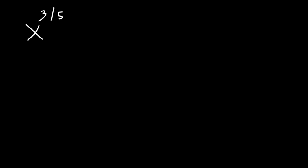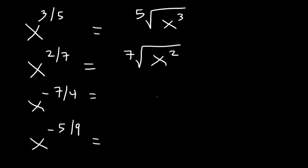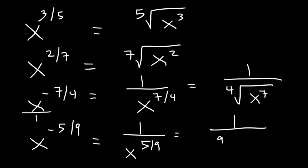Now let's try the same in reverse — converting exponential notation to radical notation. x to the 3 over 5 is equivalent to the 5th root of x cubed. Try these: x raised to the 2 over 7 is the 7th root of x squared. For x to the negative 7 over 4, make the exponent positive by flipping — put x in the denominator so it becomes 1 over the 4th root of x to the 7th. Similarly, x to the negative 5 over 9 becomes 1 over the 9th root of x to the 5th.